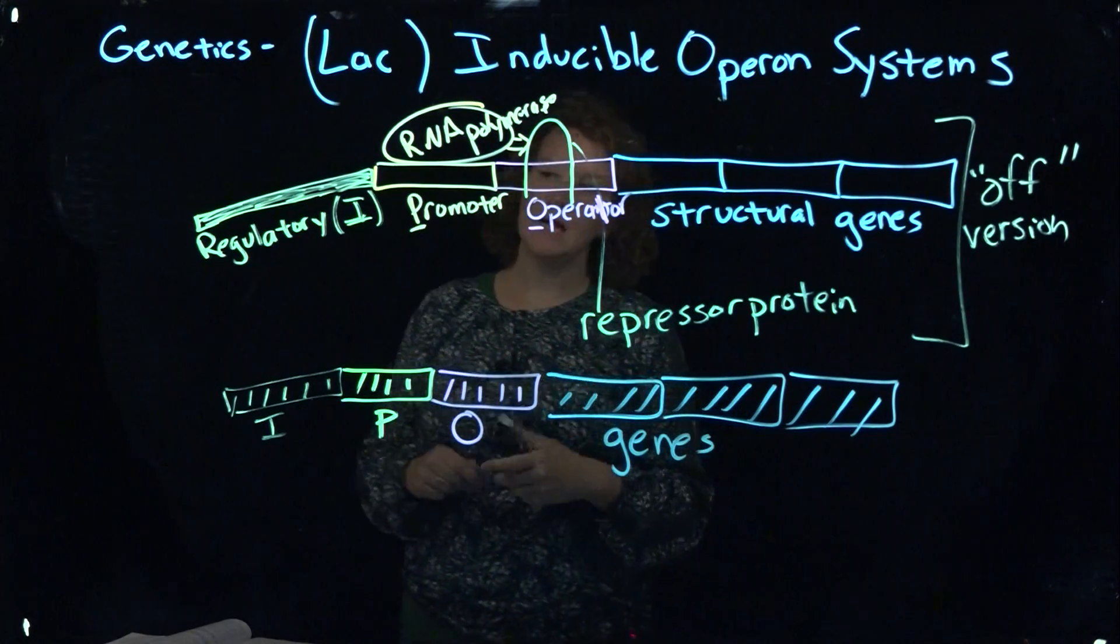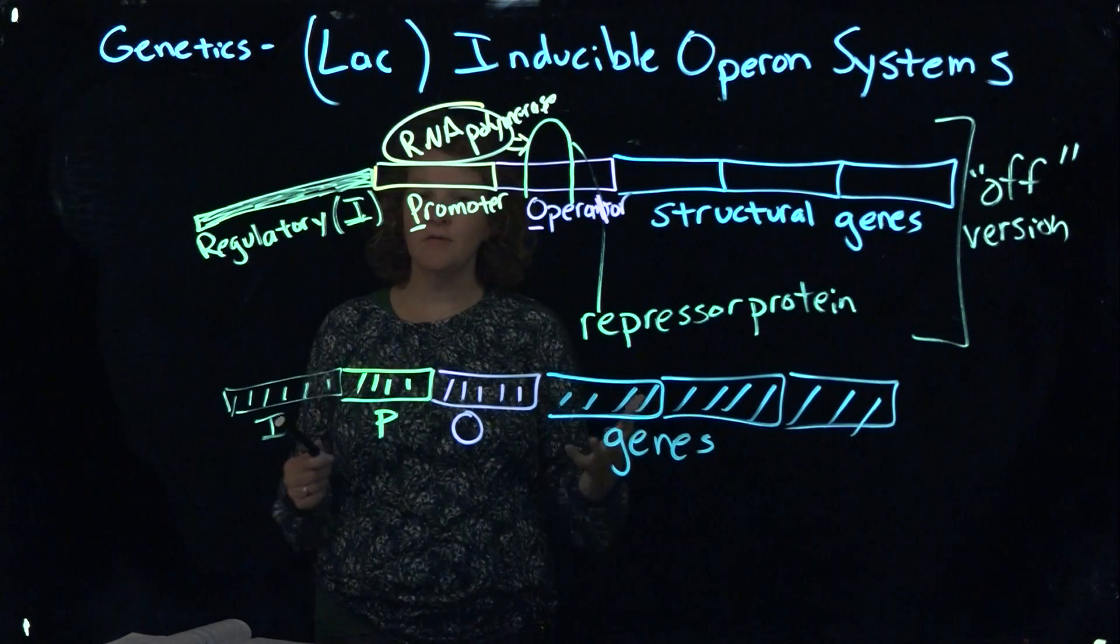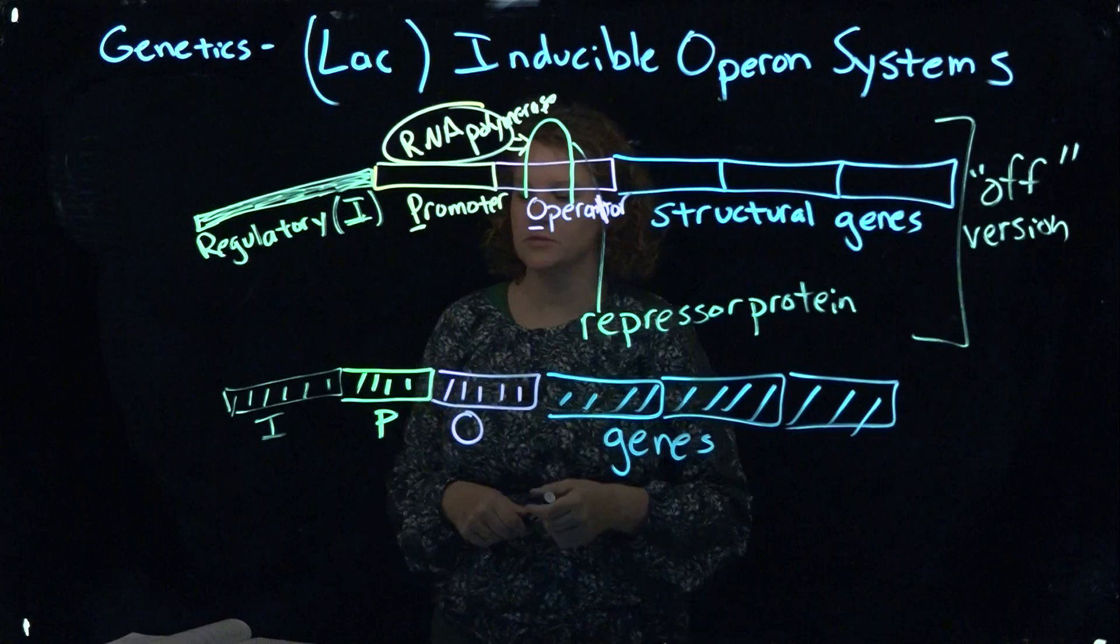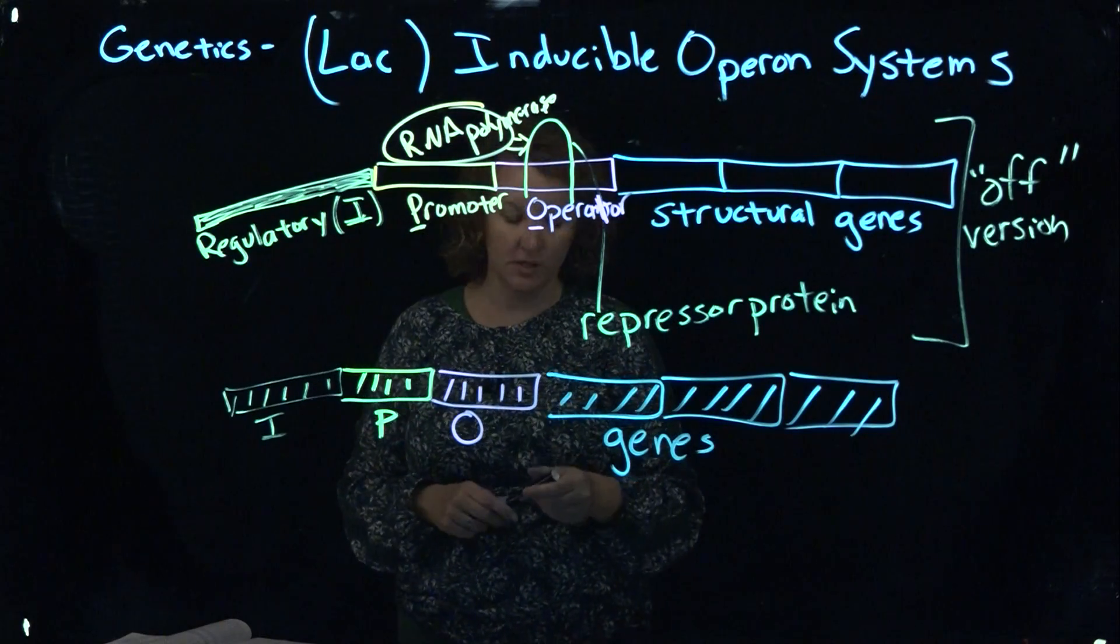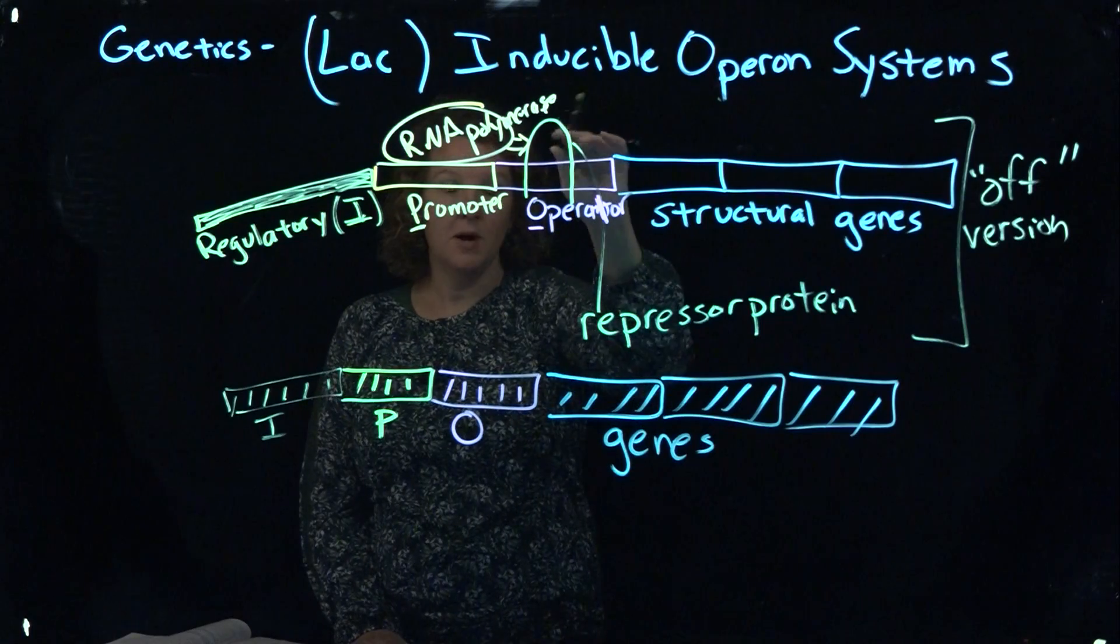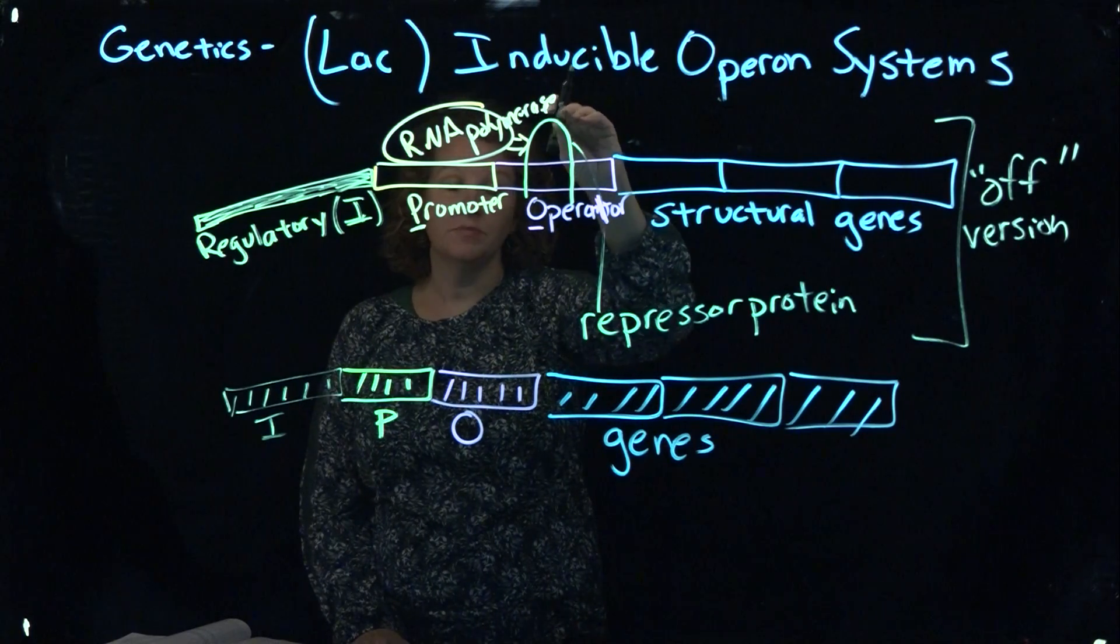So when lactose, the sugar lactose becomes available in the cell, and other sugar systems have other operon systems as well. Other sugars have their own operon system. So lactose is just one version here.